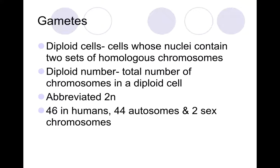Let's talk about gametes. Gametes are sex cells, and we first need to figure out what a diploid cell is. Diploid cells are cells whose nucleus contains two sets of homologous chromosomes — those are our somatic body cells. Di means two, so they have twice the number of chromosomes found in haploid cells. We represent these as 2n, where n is the number of chromosomes in a haploid cell. In humans, 46 total chromosomes — 44 autosomes and two sex chromosomes.